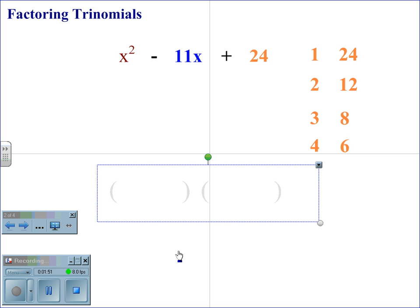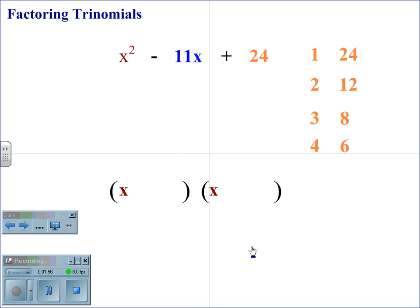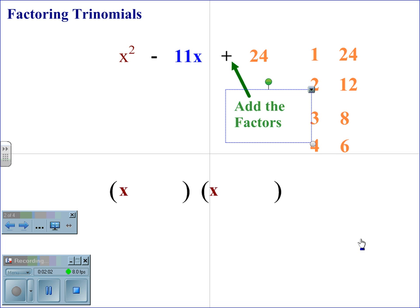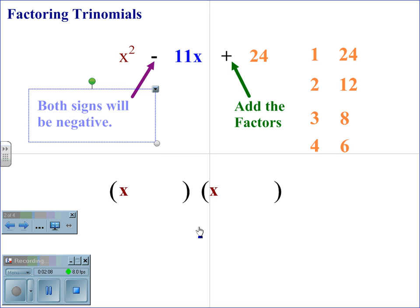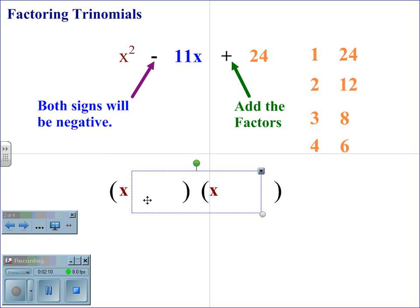We begin by placing our parenthesis sets as before. x squared factors out to x times x. Now we look at our signs again. The second sign being positive tells us we are adding the factors. Therefore, the signs will be the same. The first sign being negative tells us that both signs will be negative. Therefore, we place a negative in each parenthesis.